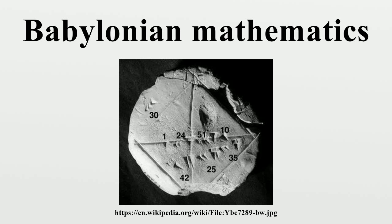Babylonian texts usually approximated Pi as 3, sufficient for the architectural projects of the time. The Babylonians were aware that this was an approximation, and one old Babylonian mathematical tablet excavated near Susa in 1936 gives a better approximation of Pi as 25/8ths equals 3.125, about 0.5% below the exact value. The Babylonian mile was a measure of distance equal to about 11.3 kilometers. This measurement for distances was eventually converted to a time mile, used for measuring the travel of the sun, therefore representing time.